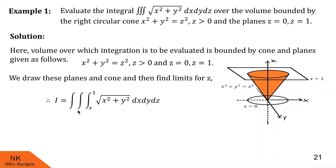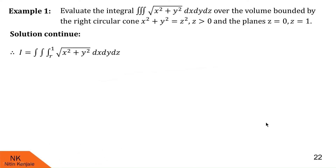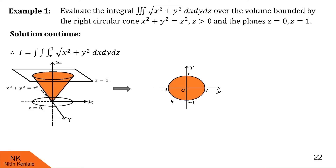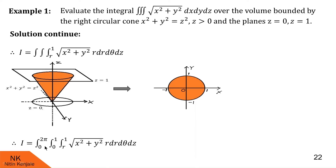Next we find limits for the middle integral. We project this volume onto the xy-plane, and we see a circle on the xy-plane with radius 1. From this circle, r varies from 0 to 1 and theta varies from 0 to 2π. So the middle integral will have limits 0 to 1 and the outside integral will have limits 0 to 2π. The order of evaluation will be dz, then dr, then dtheta.